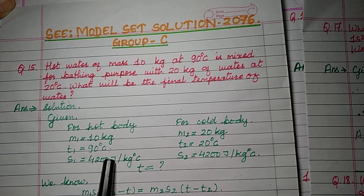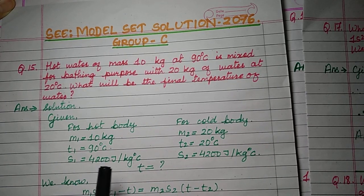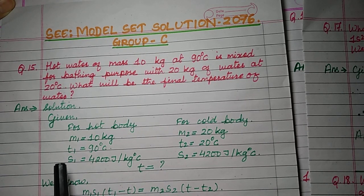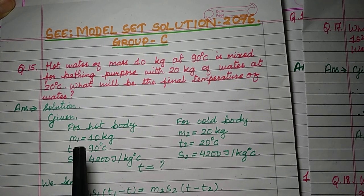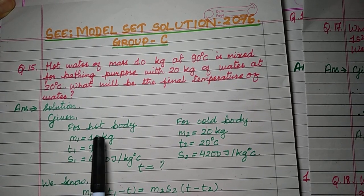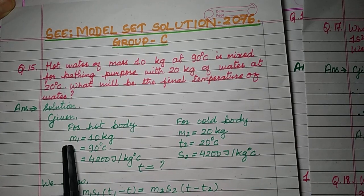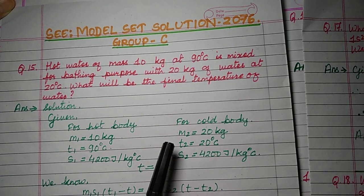This is from the principle of calorimetry. According to the principle of calorimetry, heat loss equals heat gain. Heat lost by the hot body is equal to heat gained by the cold body. Subscript 1 is used for the hot body and subscript 2 is used for the cold body in this formula.